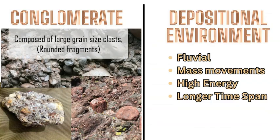Conglomerate is a sedimentary rock with large clasts — large sediments that are rounded and smoothed. The environment that forms this rock is fluvial, or mass movements such as downhill movement of sediments with high energy over a long time span, because it takes more time to weather and erode the sediments into these rounded shapes.